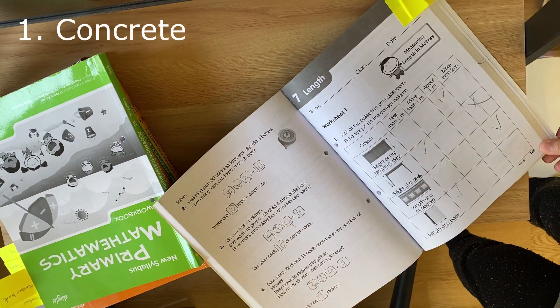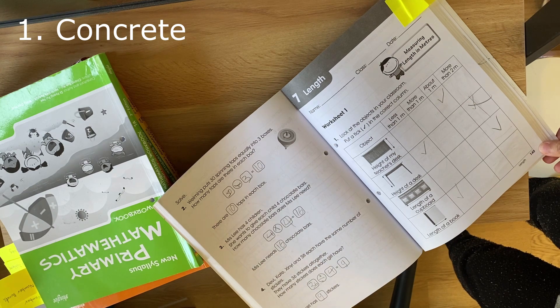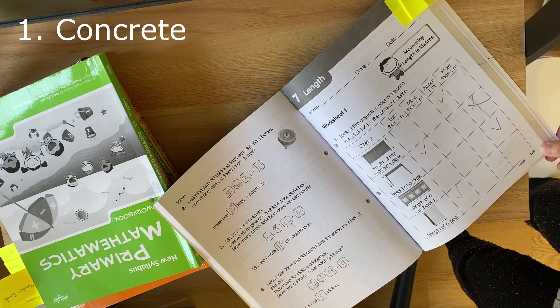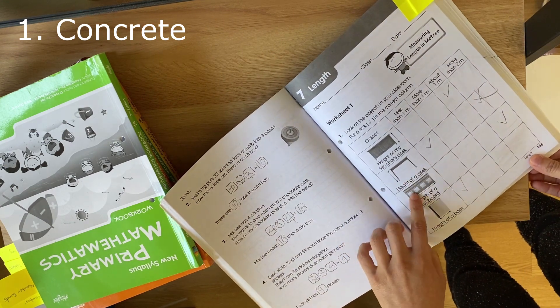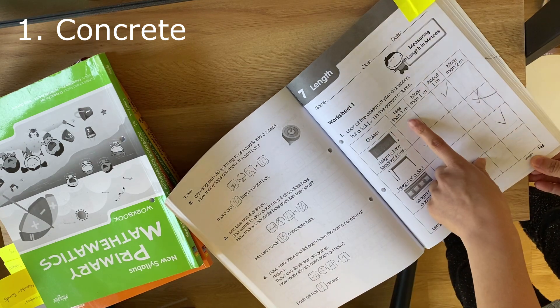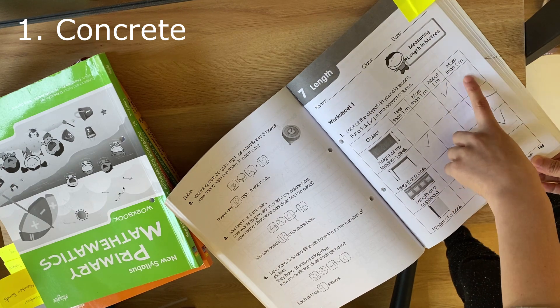Okay, so in the concrete stage, students engage in hands-on learning experiences using physical objects like a measuring tape or a ruler. Here they're asking you to find bits of furniture and items around the house and measure them. Are they less than one metre? More than one metre? About a metre? Or more than two metres?